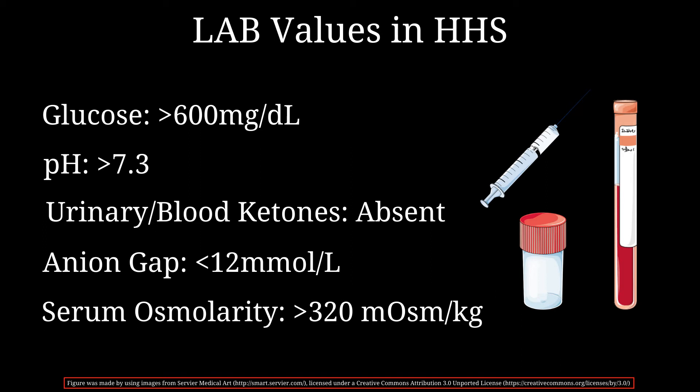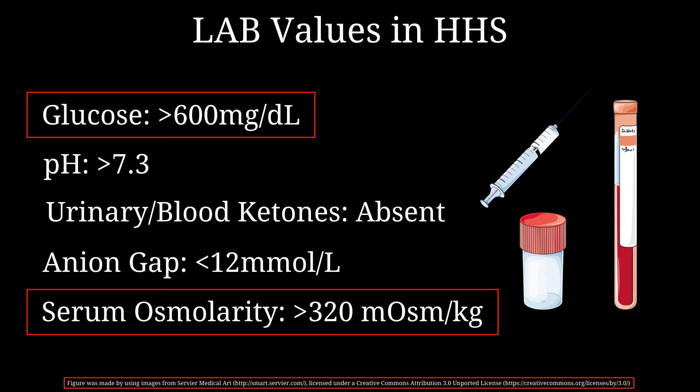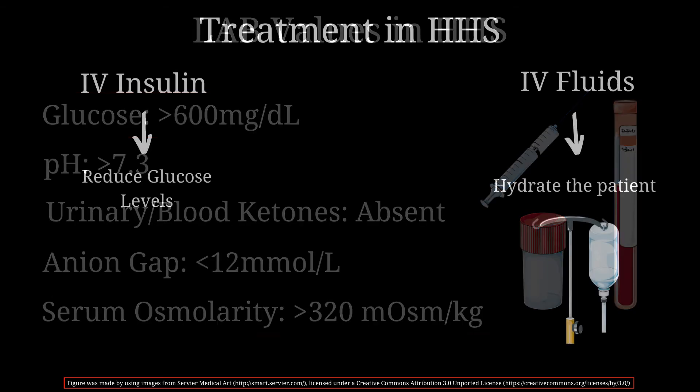The key findings to focus on in hyperosmolar hyperglycemic state are the glucose levels, which will usually be higher than 600 mg per deciliter, and serum osmolarity, which will be more than 320 milliosmoles per kilogram.